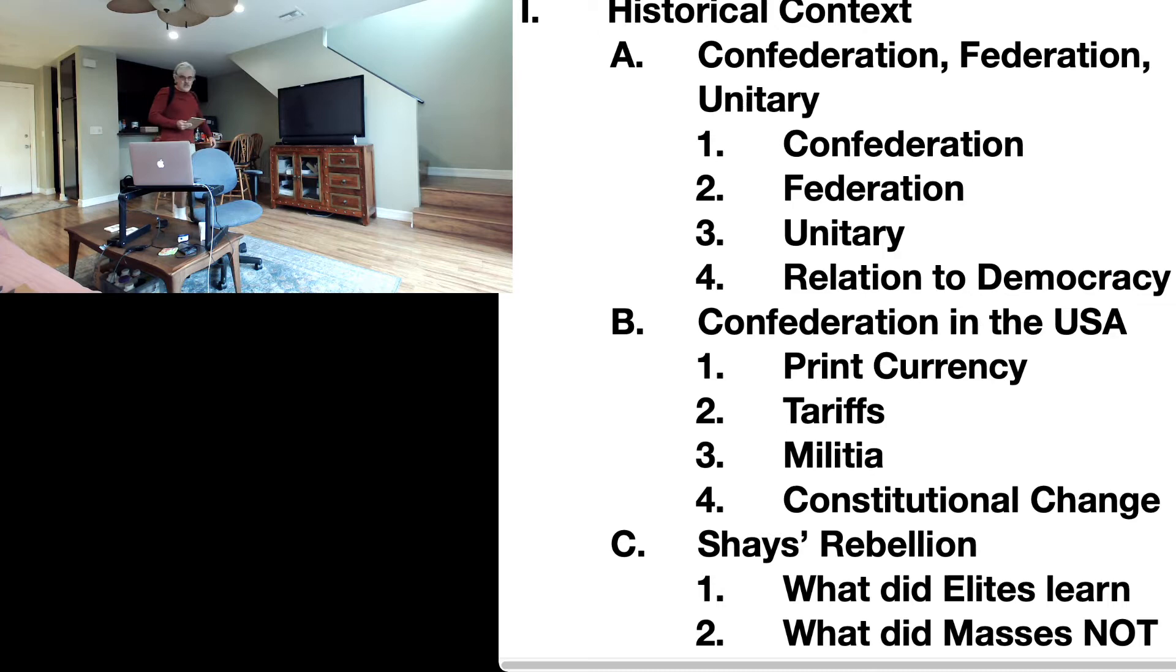The people with property learned that you need a strong central government that does two important functions. Number one, put down rebellions - put down rebellions that are disruptive to the economic process. And number two, protect property owners from non-property owners, as James Madison, one of the founding fathers, once said.